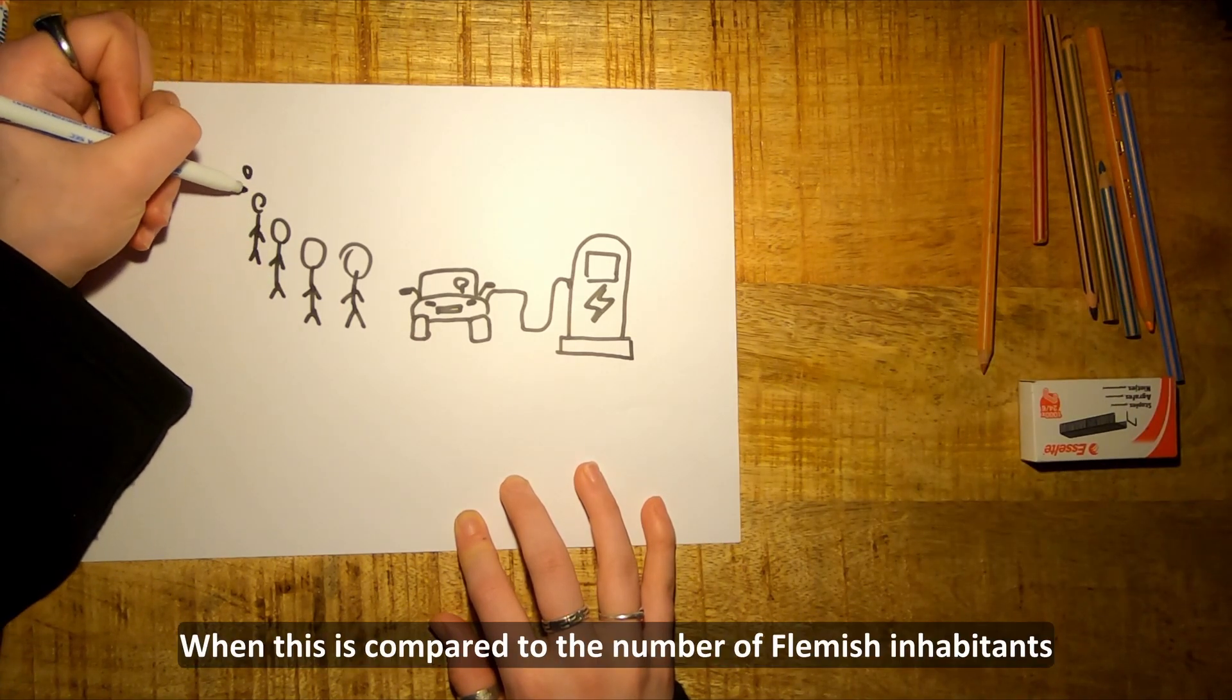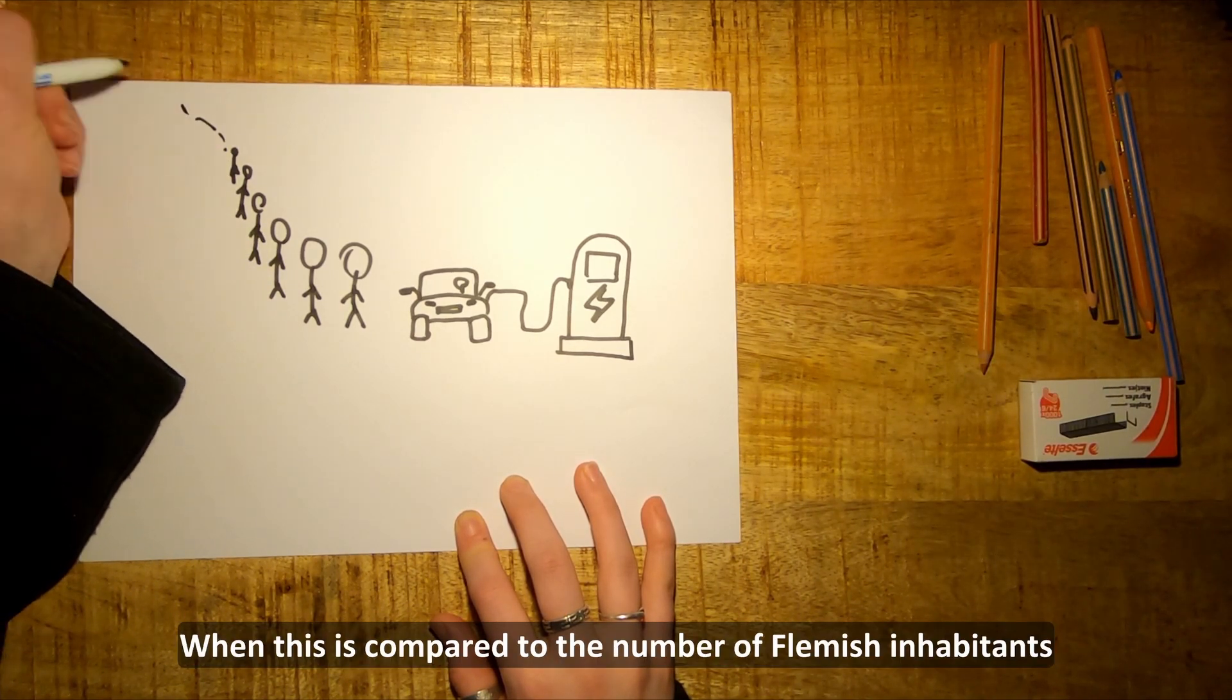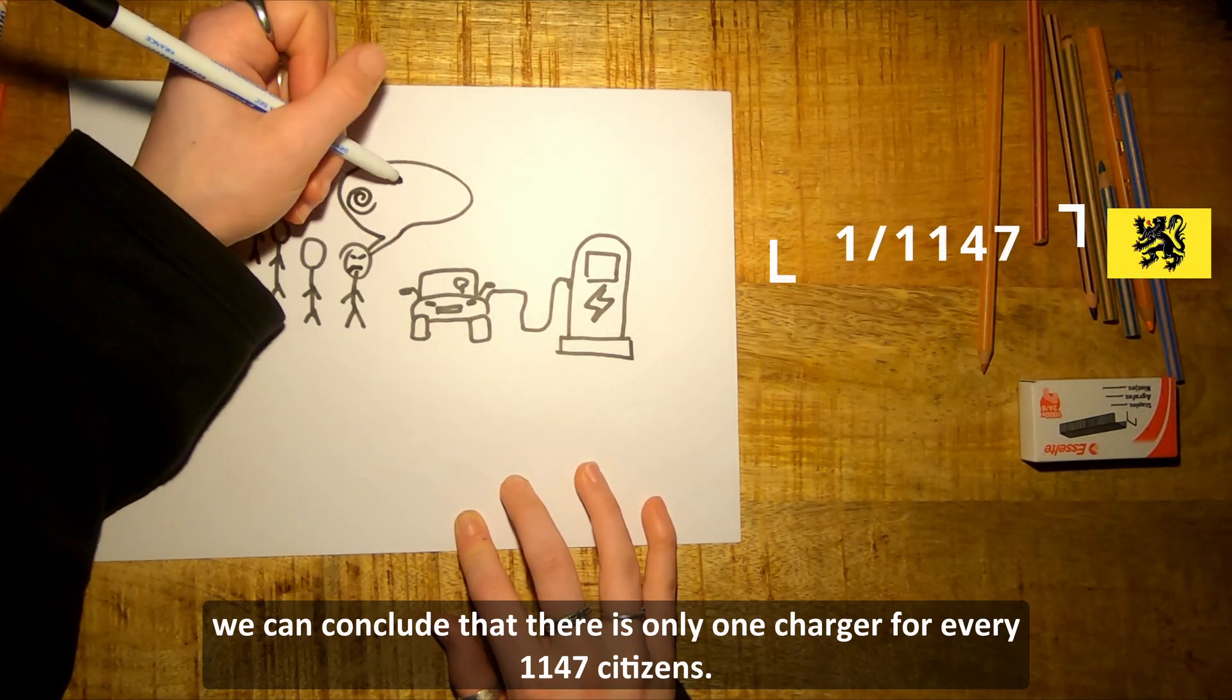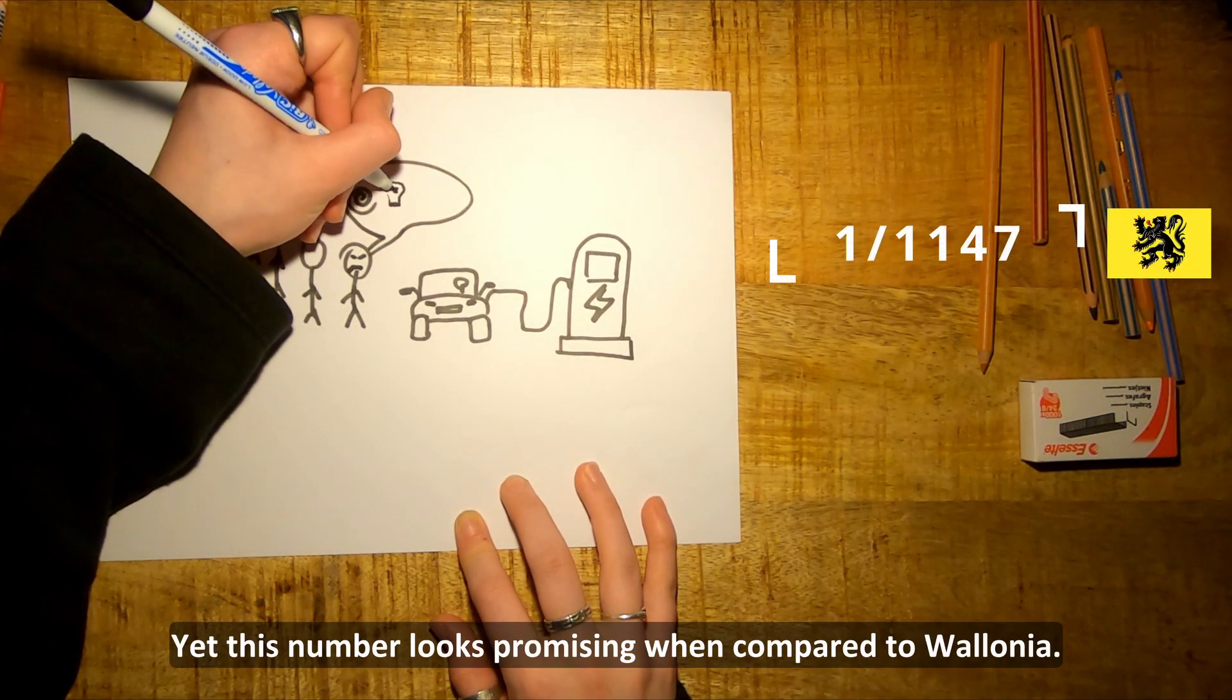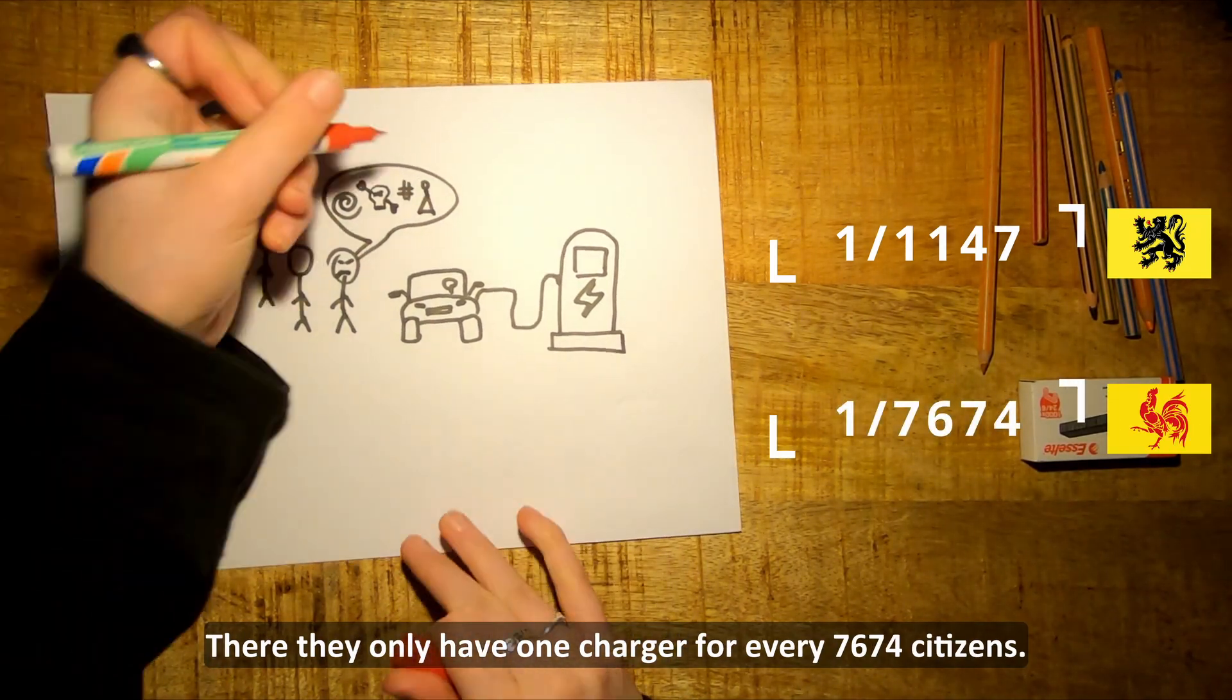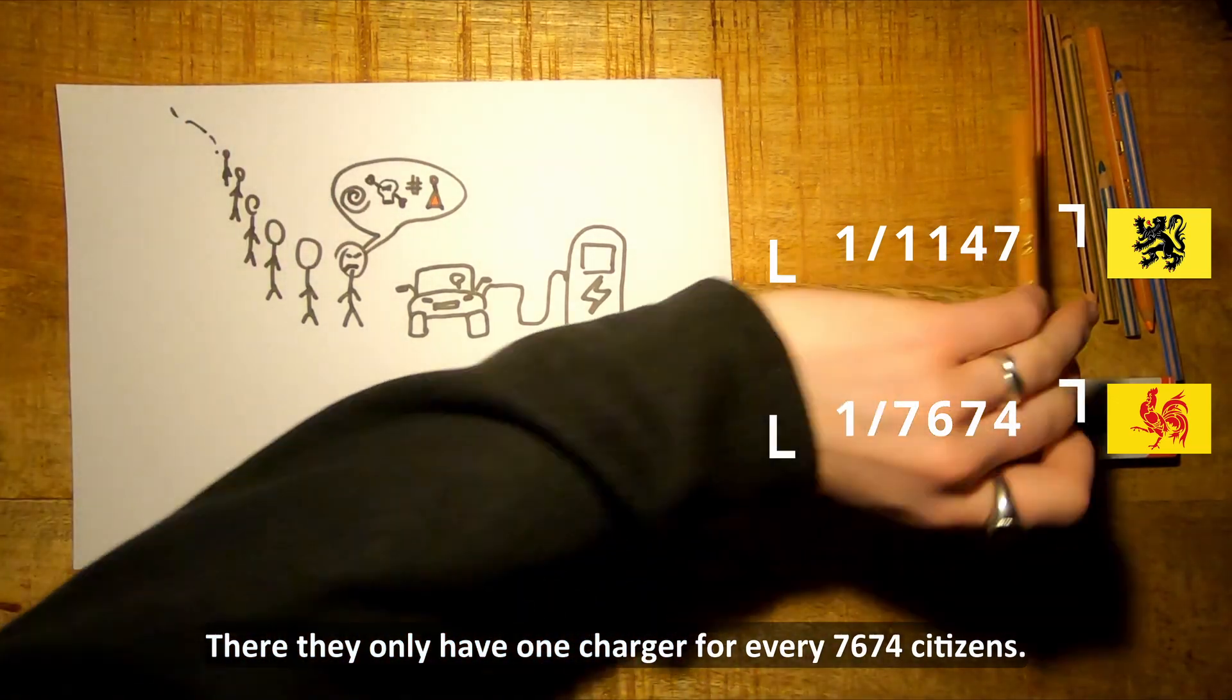When this is compared to the number of Flemish inhabitants, we can conclude that there is only one charger for every 1147 citizens. Yet this number looks promising when compared to Wallonia, where they only have one charger for every 7674 citizens.